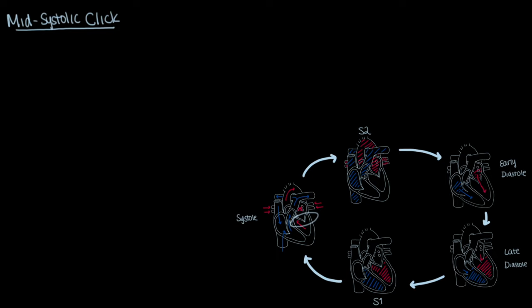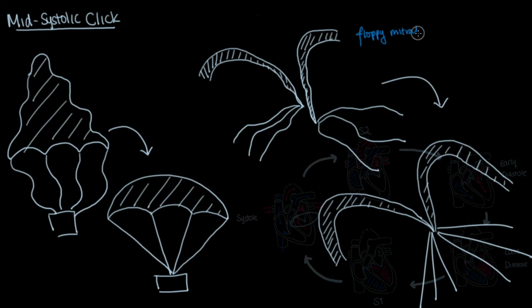This would be a good time to talk about mid-systolic clicks. Mid-systolic clicks are caused by an abnormal, somewhat floppy, mitral valve that is able to still function to keep blood from regurgitating, but has to balloon out into the left atrium first before it becomes taut.